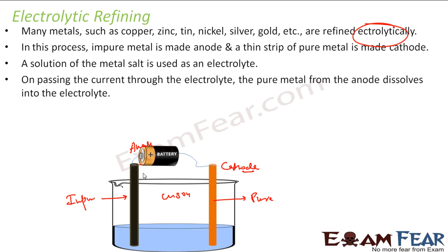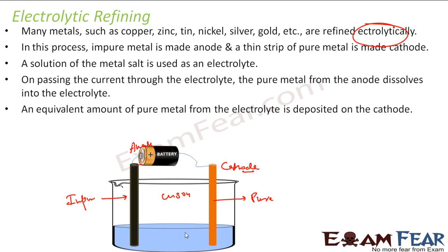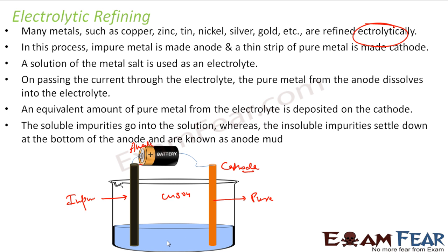On passing electricity, the pure metal from the anode dissolves into the electrolyte and then it goes to the cathode. The equivalent amount of metal deposits on the cathode and the impurities settle down. Since the copper sulphate solution has copper plus ions, and we are assuming it is copper, the solution will have a lot of copper ions.